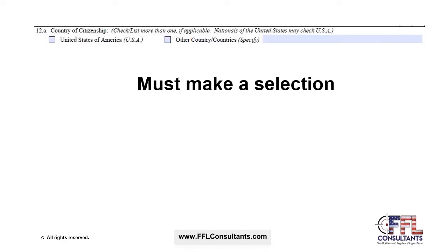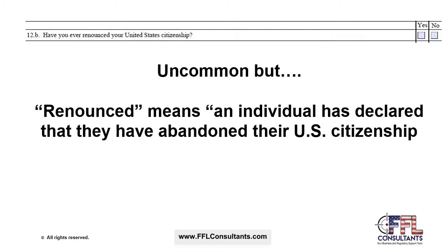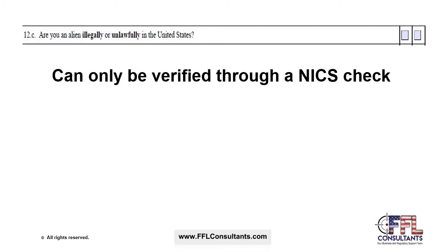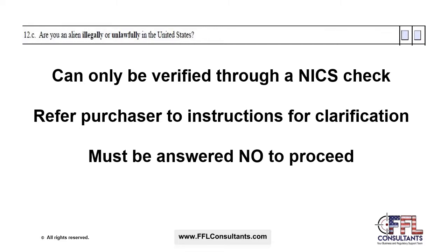Question 12A asks about country of citizenship. The purchaser must select either the United States of America or other country, and if other country is selected they must specify where. Question 12B asks if the purchaser has ever renounced their United States citizenship — renounced means an individual has declared they have abandoned their citizenship — and this must be answered no to proceed. Question 12C asks if the purchaser is an alien illegally or unlawfully in the United States, verified only through a NICS background check, and must be answered no to proceed.